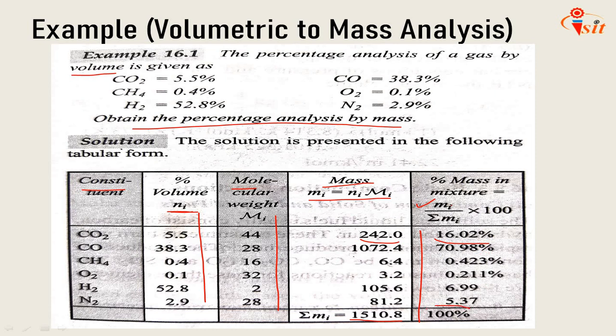So the total comes to 100%. That is the conversion: if we consider CO2 as 5.5% by volume, it converts to 16.02% by mass. That is the conversion procedure for volumetric to mass analysis.